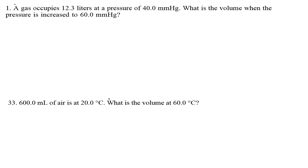The first question reads: a gas occupies 12.3 liters at a pressure of 40 millimeters of mercury. What is the volume when the pressure is increased to 60 millimeters of mercury? The first thing you should do is identify your variables. 12.3 liters is a unit of volume, 40 millimeters of mercury is a unit of pressure, and 60 millimeters of mercury is also a unit of pressure.